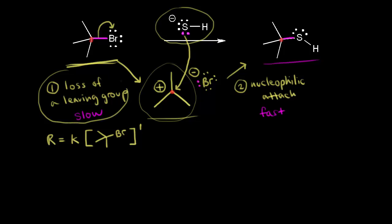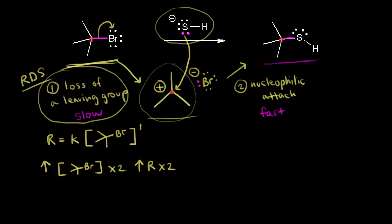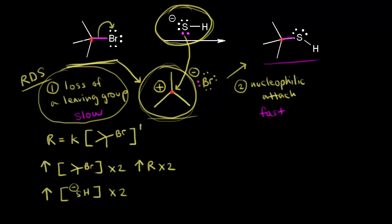That's because our first step is the slow step — this is our rate-determining step. If you increase the concentration of our alkyl halide by a factor of two, you increase the rate by a factor of two, since it's first order with respect to the alkyl halide. But if you increase the concentration of the nucleophile by a factor of two, there's no effect on the rate — it's zero order with respect to our nucleophile. The nucleophile can't attack until the carbocation is formed, which depends only on the concentration of the alkyl halide.